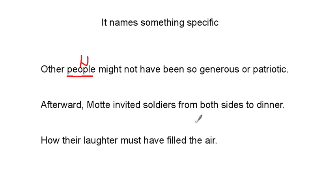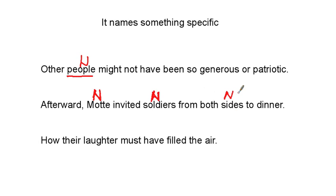Next: 'Mott invited soldiers from both sides to dinner.' 'Mott' — again a capital, someone's name — is a noun naming a specific person. 'Soldiers' is a specific group of people, that is a noun. 'Sides' is something specific, telling you what side of the war you're on — specific, so it's a noun. And 'dinner' is a specific meal — noun. These are the specific things.